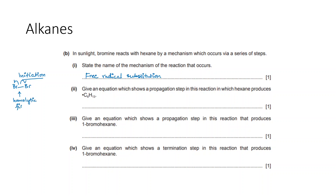In homolytic fission, the bond pair breaks such that each atom gets one electron from the bond pair. Both atoms will then have one unpaired electron, which is why these species are known as free radicals. An equation for a propagation step: hexane produces the hexyl free radical — this is hexane with one hydrogen removed, and one carbon atom contains a dot representing an unpaired electron.